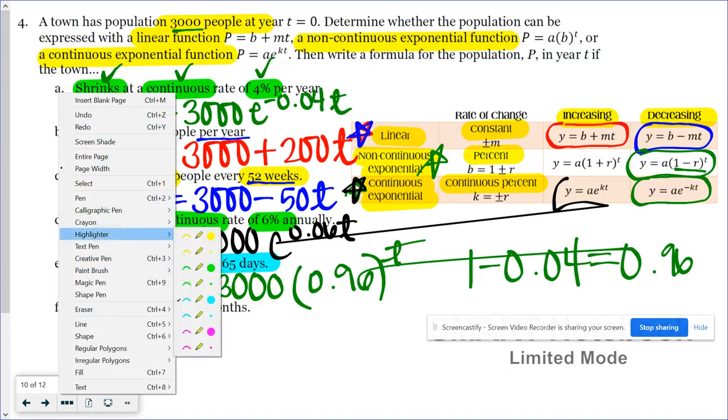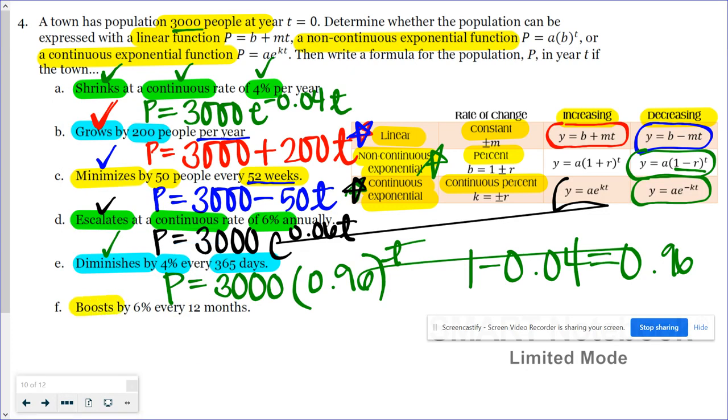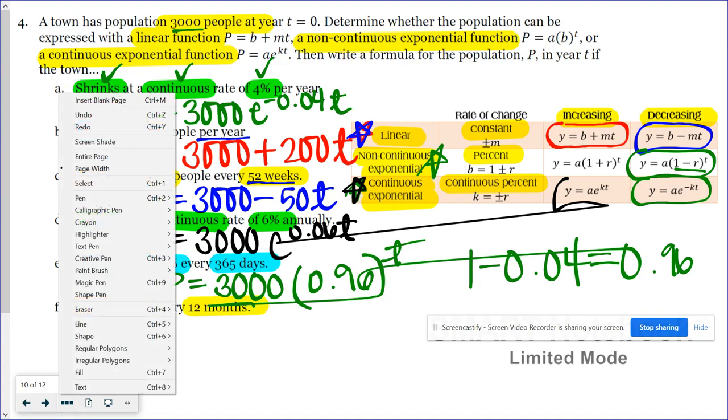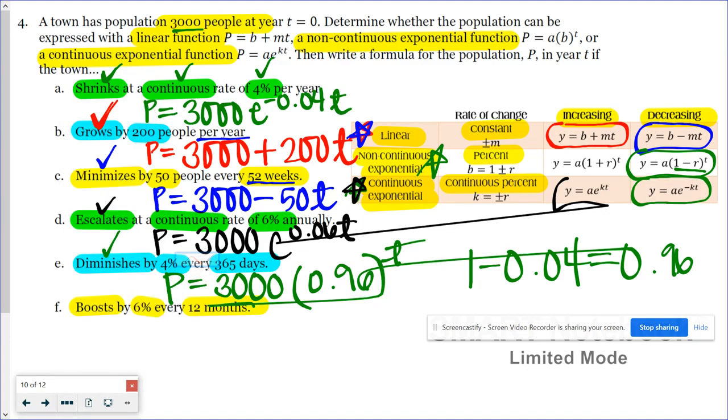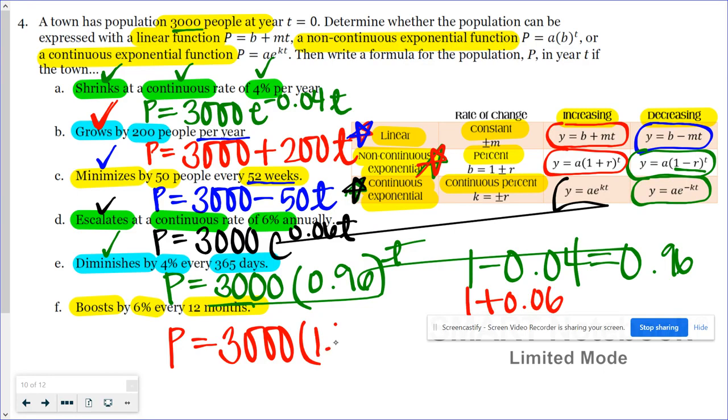Thank goodness we're on the last one. The last one says boosts by 6% every 12 months. That every 12 months is another way of saying every year. Boosts by 6%, I agree. We're looking at non-continuous exponential, and it's growing. So y equals a times 1 plus r to the t power. We have P for population is equal to 3,000 times 1 plus 0.06. And so we're looking at 1.06 to the t power.